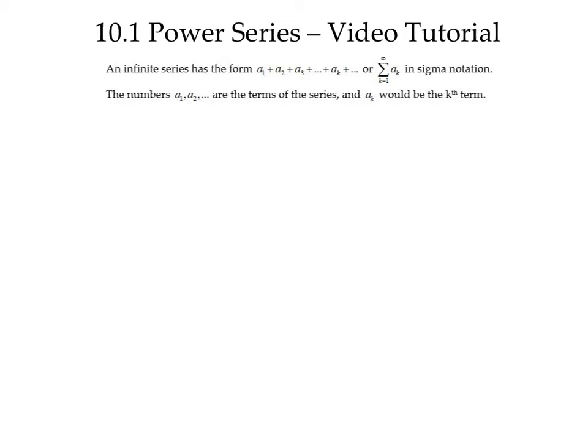A key tool in studying infinite series is partial sums. Let's remember how we form the partial sums of a series. The first partial sum, S1, is just the first term, A1. S2, the second partial sum, is A1 plus A2. S3, the third partial sum, is A1 plus A2 plus A3. In general, the n-th partial sum of an infinite series is the sum from k equals 1 to n of A sub k. These partial sums can be made into a sequence.